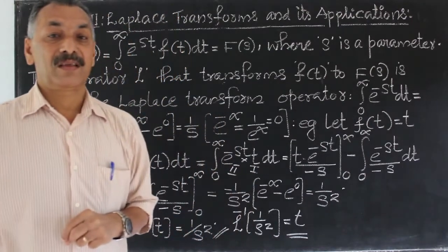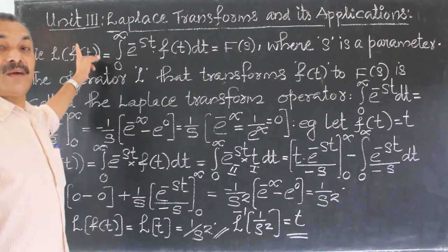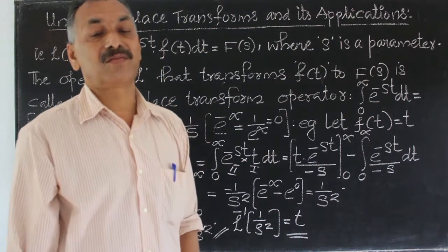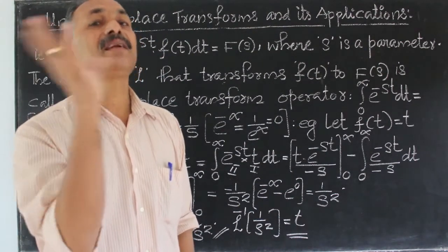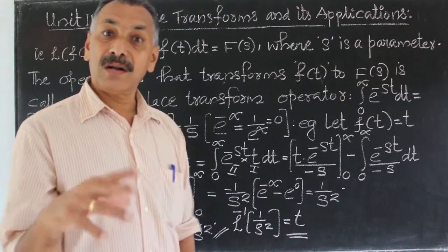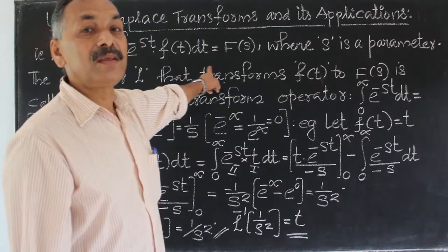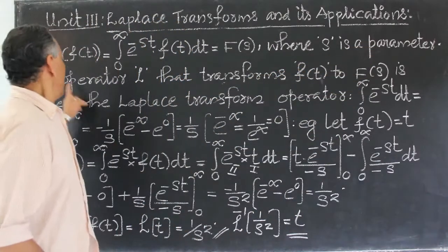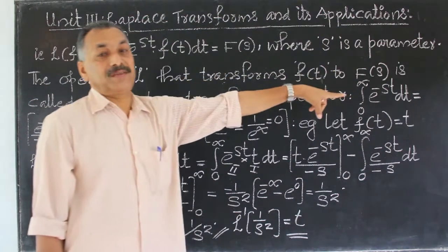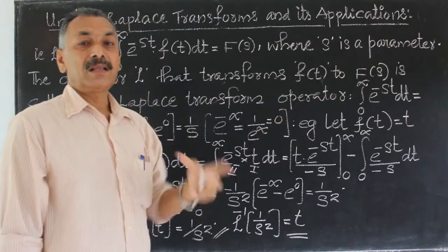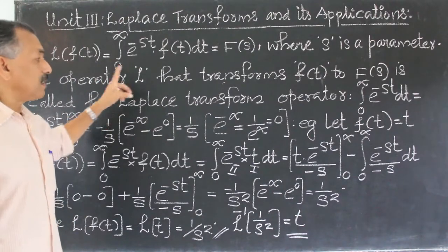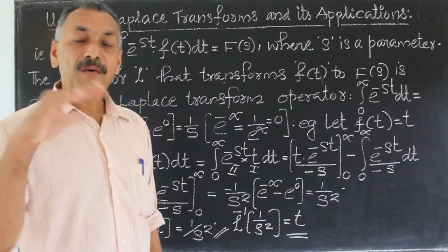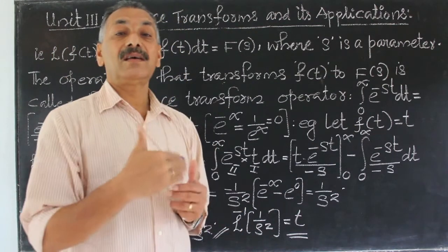But in the case of a Laplace transform: L of f of t — here f of t is a function of t, but L of f of t is a function of s. So there is a difference: the Laplace transform changes the variable from t to s, and L is called the Laplace transform operator.